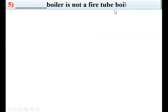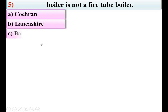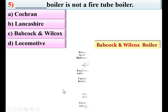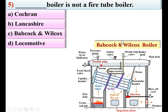Which boiler is not a fire tube boiler? Options: Cochran boiler, Lancashire boiler, Babcock and Wilcox boiler, locomotive boiler. As discussed earlier, in the Babcock and Wilcox boiler the water is inside the tubes, so it is known as a water tube boiler. Out of these options, only the Babcock and Wilcox is a water tube boiler, and that is why it is not a fire tube boiler. So C is the right answer.